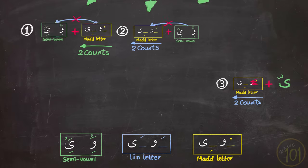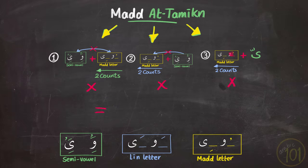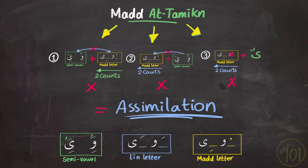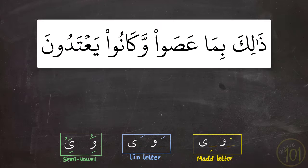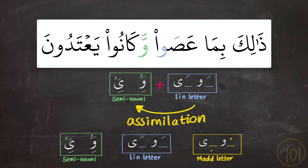Finally, it is important to know that these three cases are the only cases for مد التمكين. So if we don't see any of these rules, then we will have assimilation, even if it involves the letters وو and يا. Like in this example — here we have a lean letter, so وا with سكون and فتحة on the letter before it, followed by a semi-vowel وا with فتحة. The result here is full assimilation, fusing these two letters into one, and there is no مد التمكين here whatsoever. We read it as: ذلك بما عصوا كانوا يعتدون — so عصوا كانوا, because there is assimilation in this case.